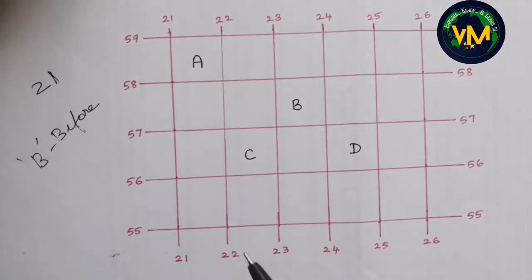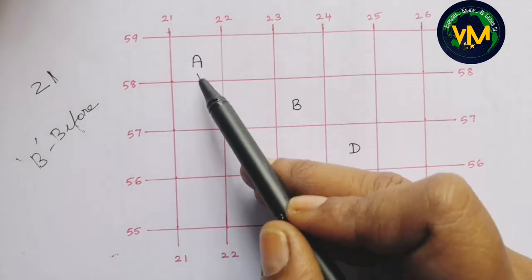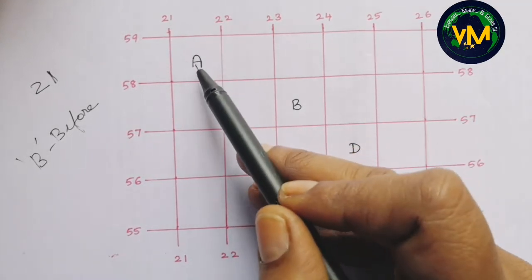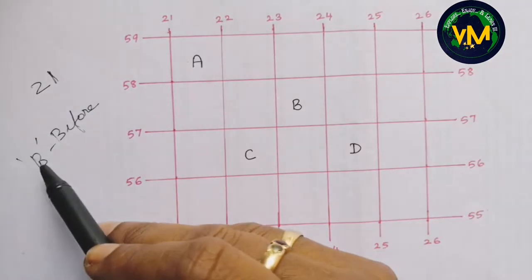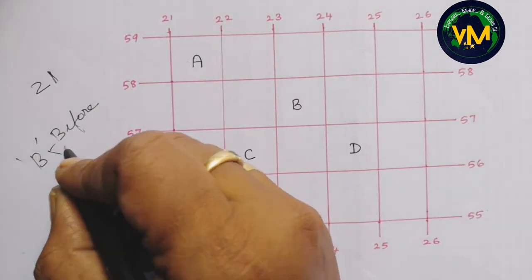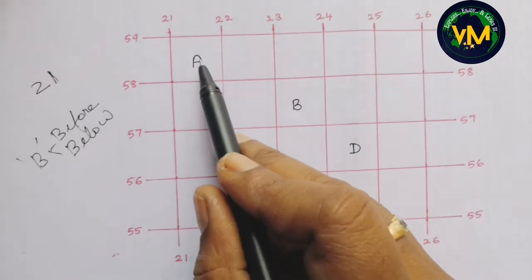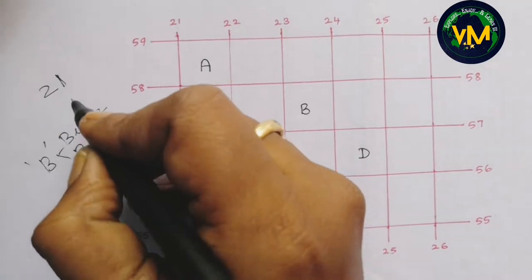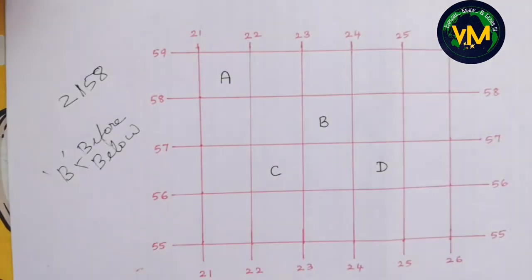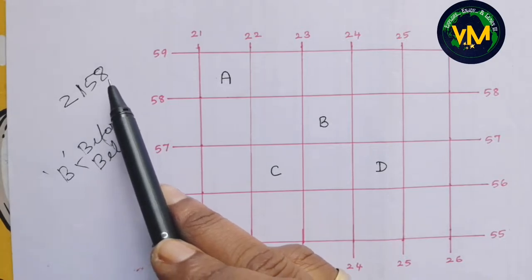Then we have northings. These are the two northings present near place A. Here again we follow the B rule, which stands for 'below.' The line that is below the object should be read — so 58. The four-figure grid reference is 2, 1, 5, 8.